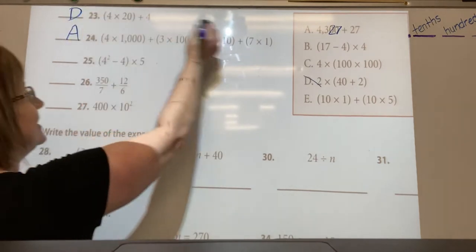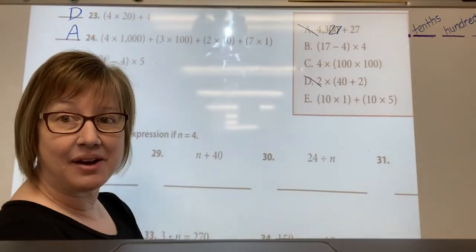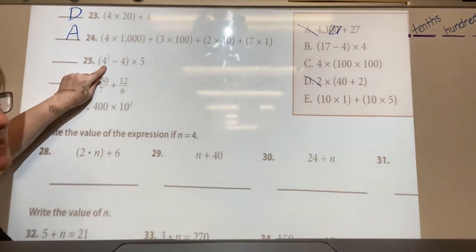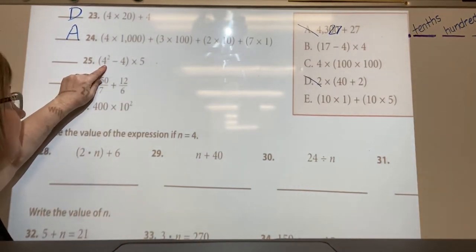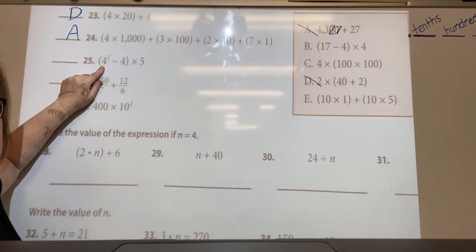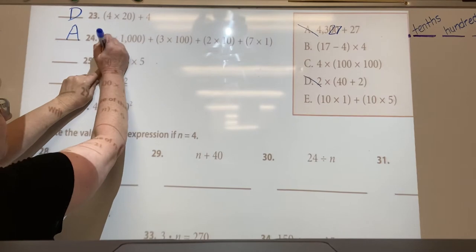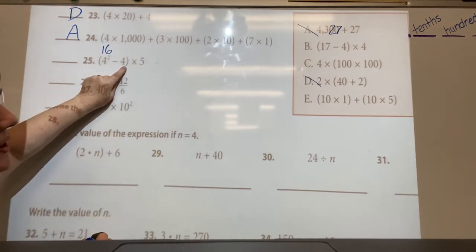Do you see how we got that? I love how they throw these at us. This is called four squared, so four times itself which is sixteen. Sixteen minus four is twelve, times five is sixty.